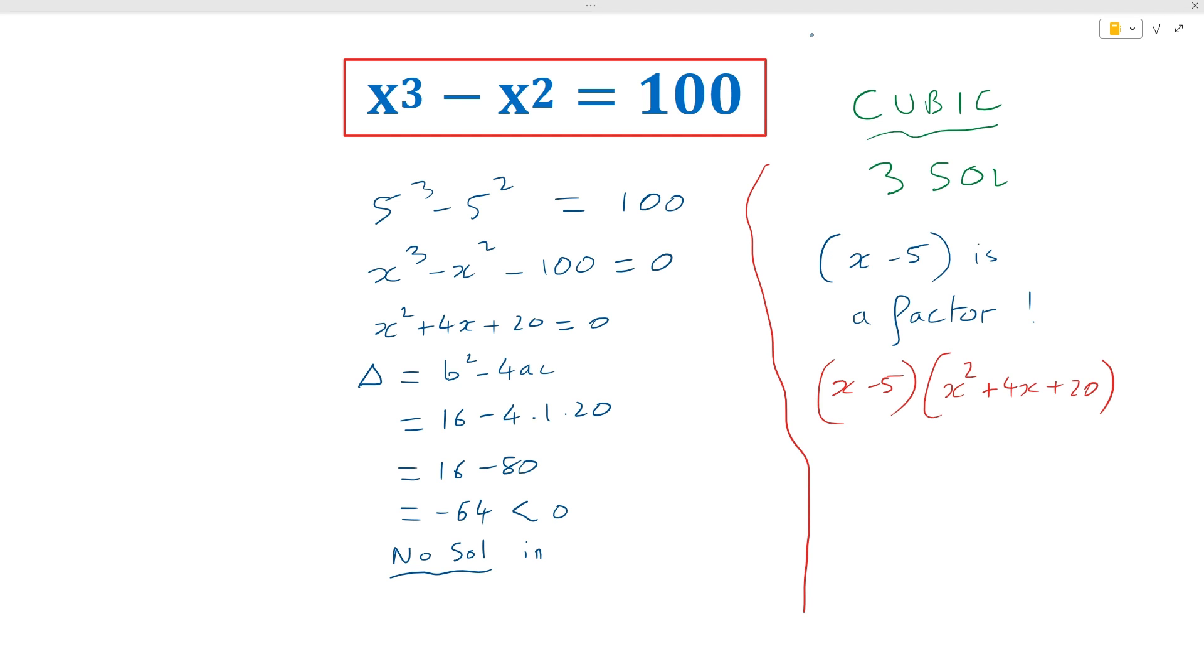So this is in the real numbers. So if we have no solutions in the real numbers, we're going to look for complex number solutions. Changing our negative 64 value for delta into 64i squared, we can say that the square root of delta is equal to 8i.